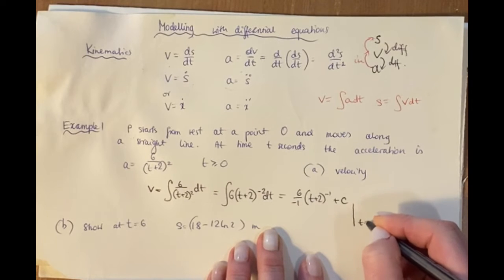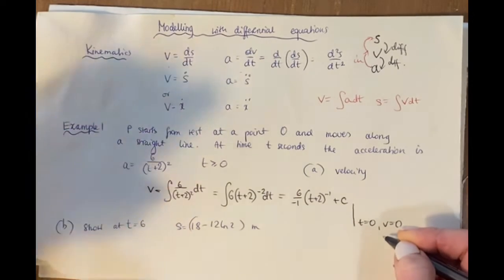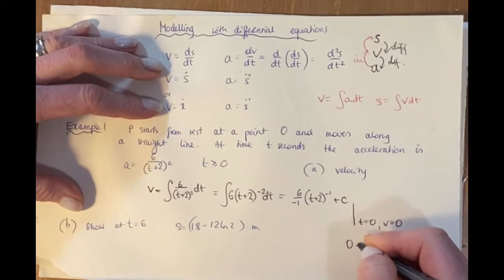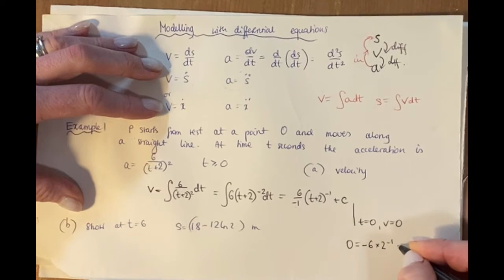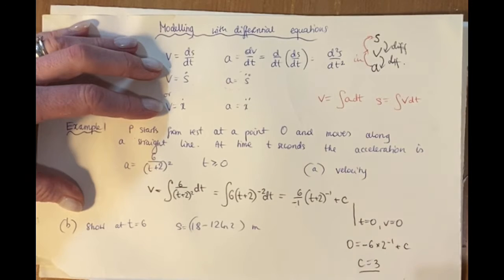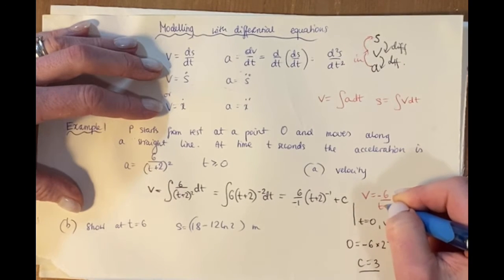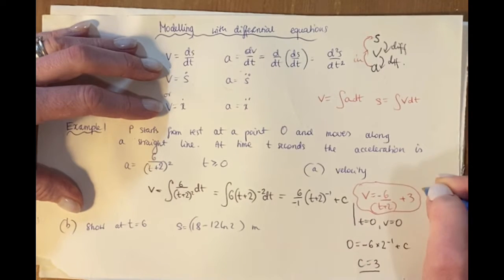We're told the particle starts from rest, so at t = 0 the velocity is 0. Substituting in: 0 = (6/−1) × 2⁻¹ + c, which gives −6/2 = −3, so c = 3. Therefore velocity = −6/(t+2) + 3 metres per second.